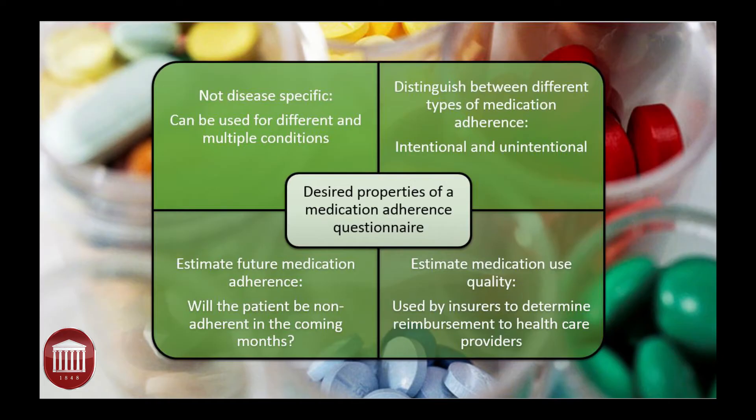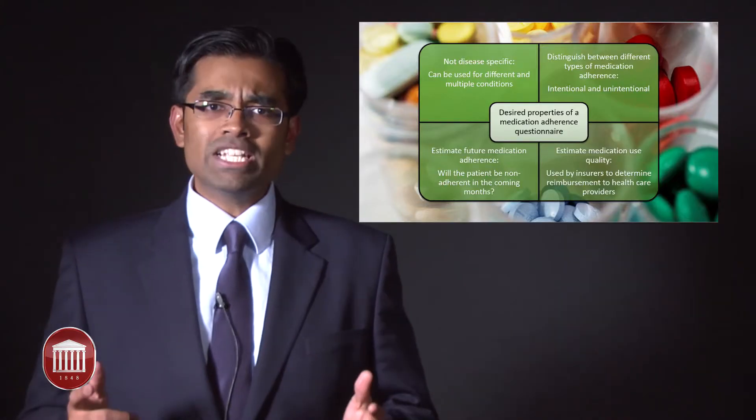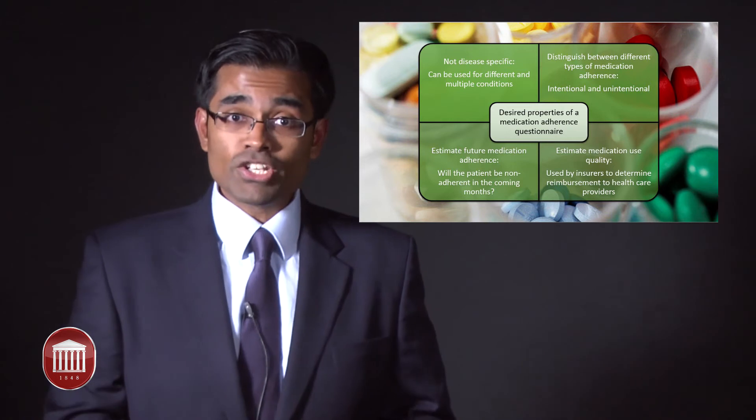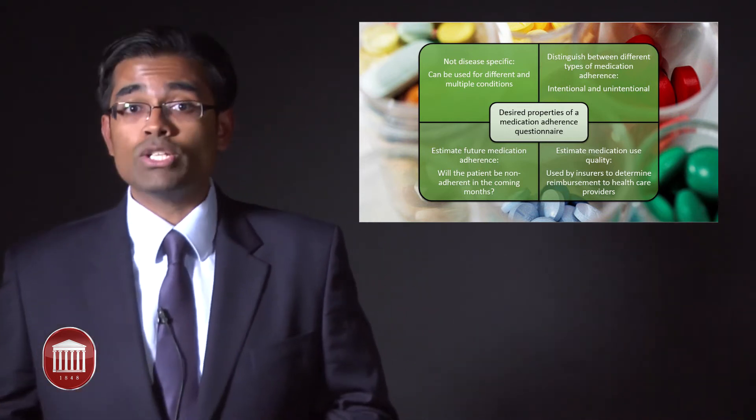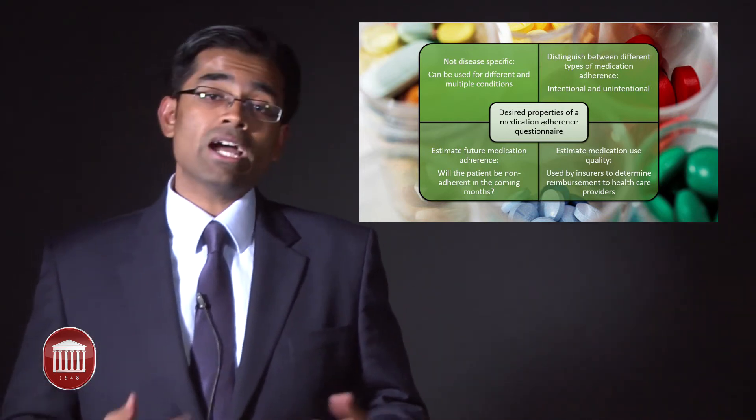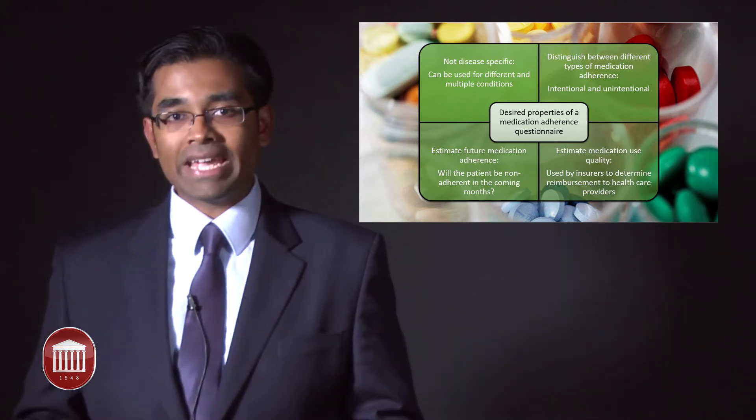The first thing we did was put forth four desired properties that such an instrument should possess. First, it should not be disease-specific, to improve applicability. Second, it should be able to distinguish between different reasons for medication non-adherence. Broadly speaking, there are two: intentional, where the patient voluntarily chooses not to take the medication, and unintentional, where the patient simply forgets.